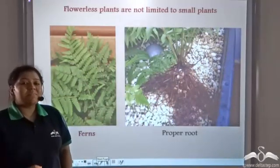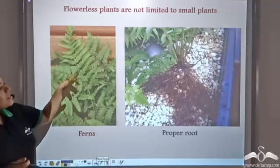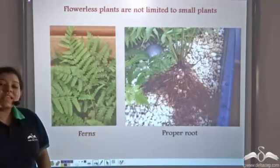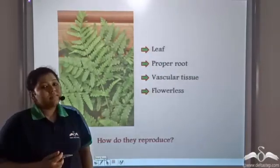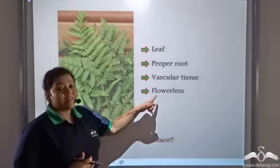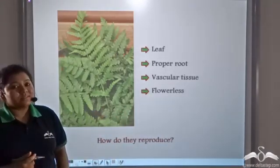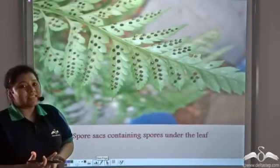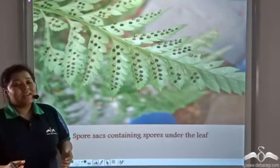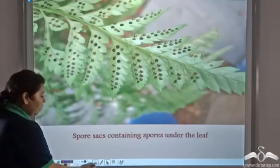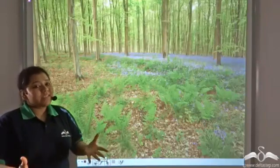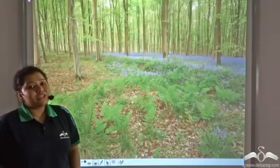Flowerless plants are not limited only to small plants. Huge plants with a proper plant-like structure — proper root system, proper leaves and stems — can also be flowerless. These plants have proper leaves, proper roots, and also a proper vascular system, yet they are flowerless. If you turn the backside of the leaves, you will find spore sacs which contain spores. When these spore sacs burst, the spores are dispersed in large numbers, and that is why you will find many of these plants growing in a crowded fashion in a small area.